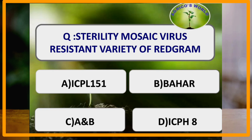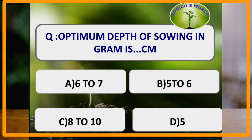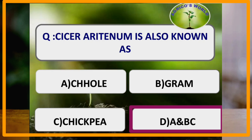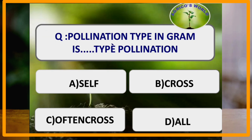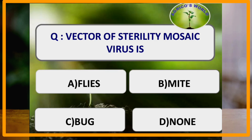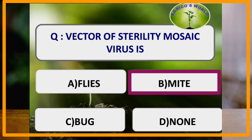Sterility mosaic virus resistant varieties of red gram are ICPL-151 and Bahar. Optimum depth of sowing in gram is 5 to 6 centimetres. Cicer arietinum is also known as chole, gram and chickpea. Pollination type in gram is self-pollination. Vector of sterility mosaic virus is Eriophyid mite.